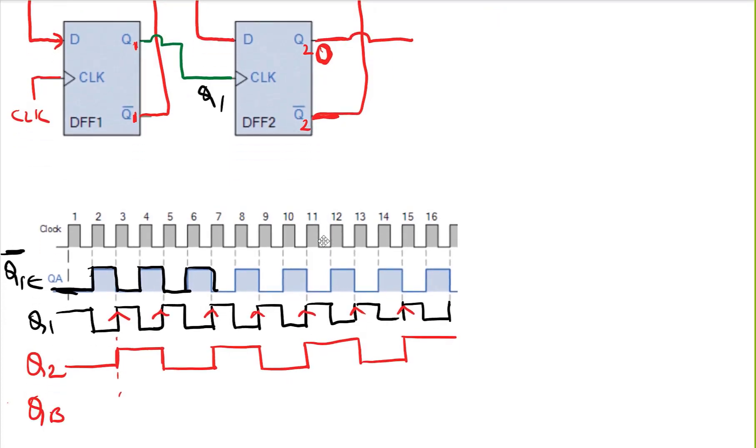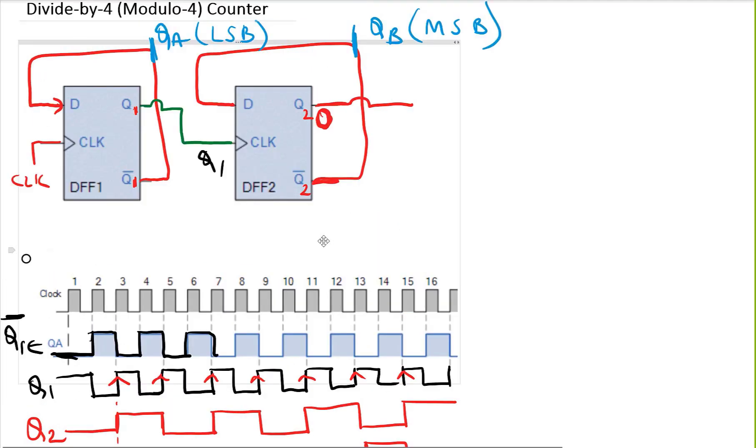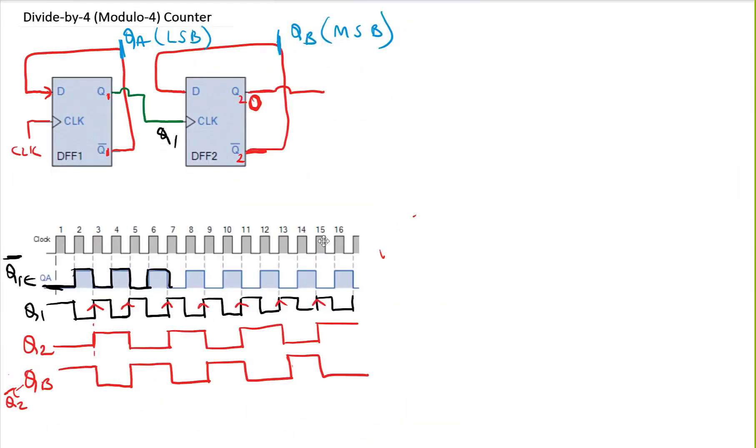So my QB, which is the Q2-not, it will become 1 here, 0 here. This is my modulo-4 counter. Here my clock frequency is F, and then frequency of QA is F over 2. And if I look at here, this is my QB. The frequency of QB is half of QA, which is F over 4. In this way, I was able to get a divide-by-4 counter.